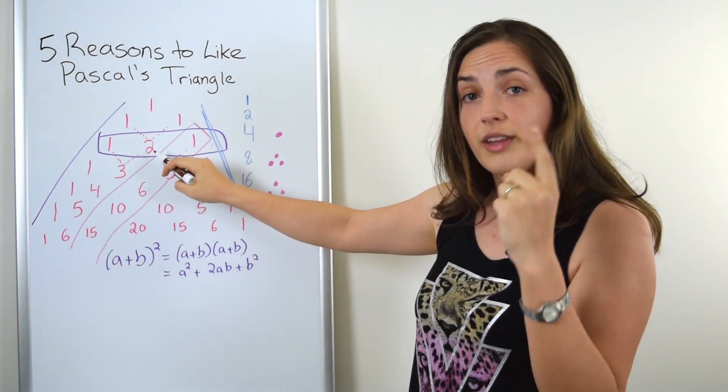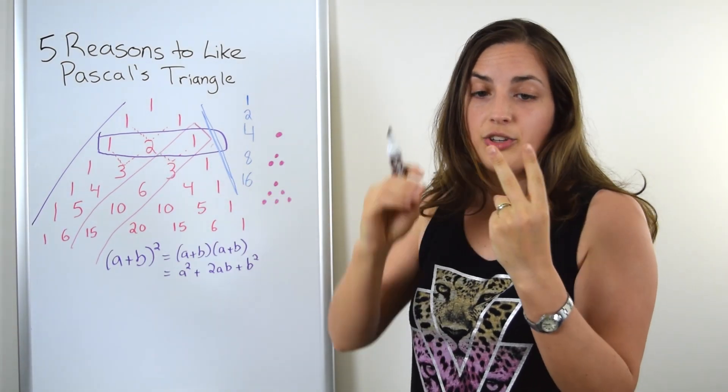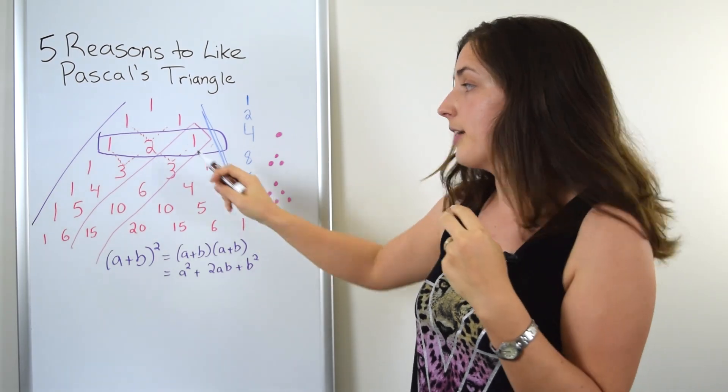How many ways are there to select only one of them? Well, you have two objects. You could select this one or this one. So there's two ways. That's this two.